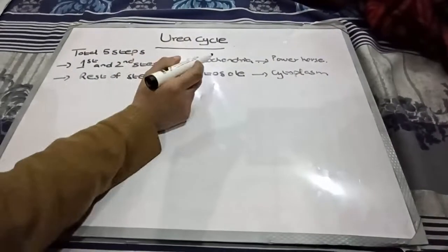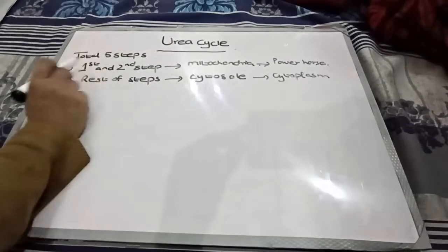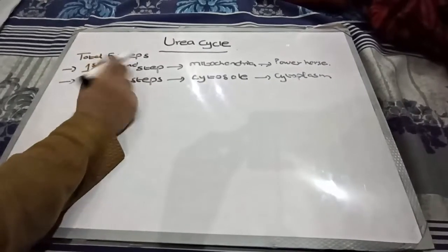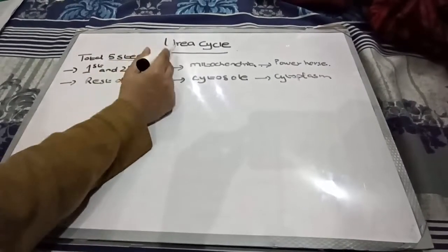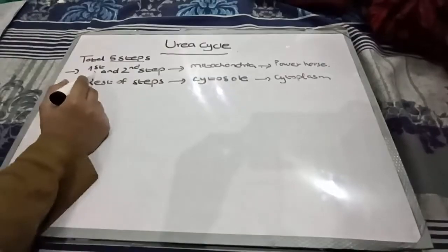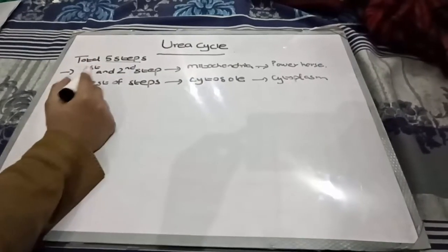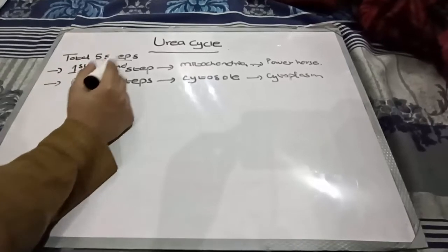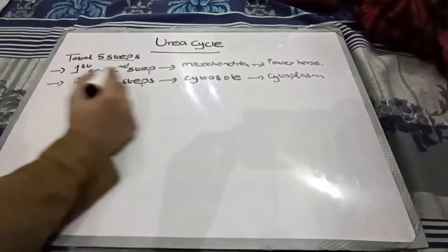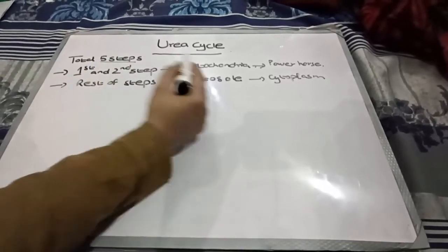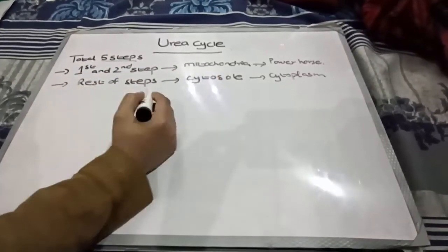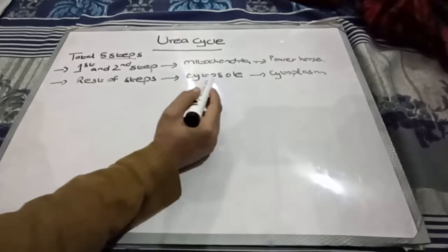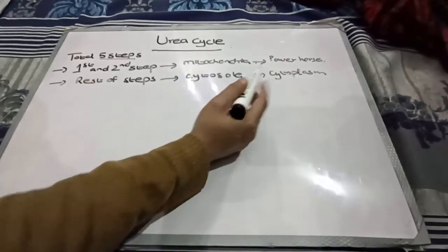So, in this video, we will discuss about the 5 steps which are necessary for the formation of urea. Among these steps, the 1st and 2nd steps take place in mitochondria. The rest of the steps will take place in cytosol and cytoplasm.